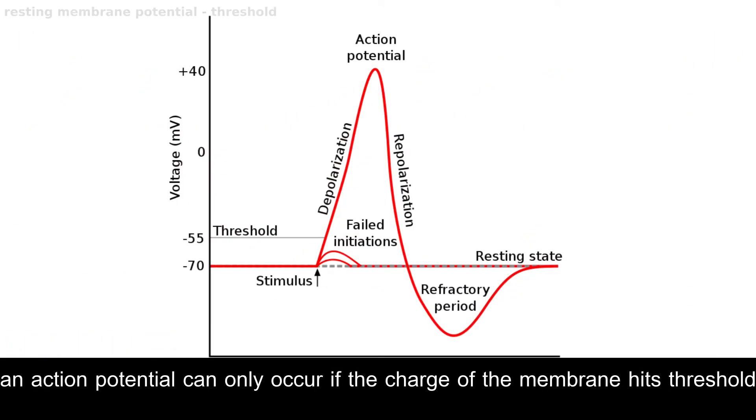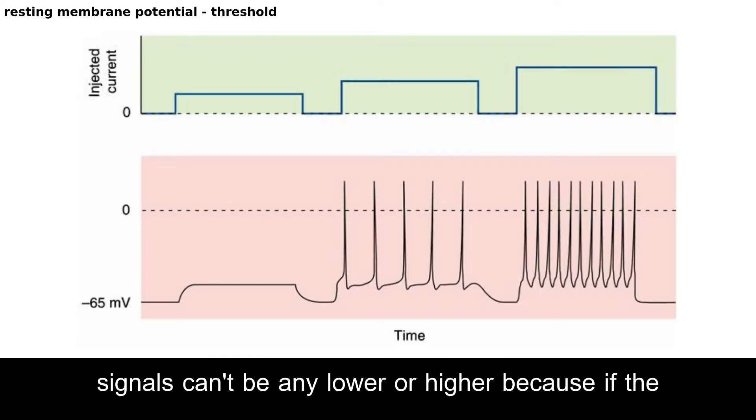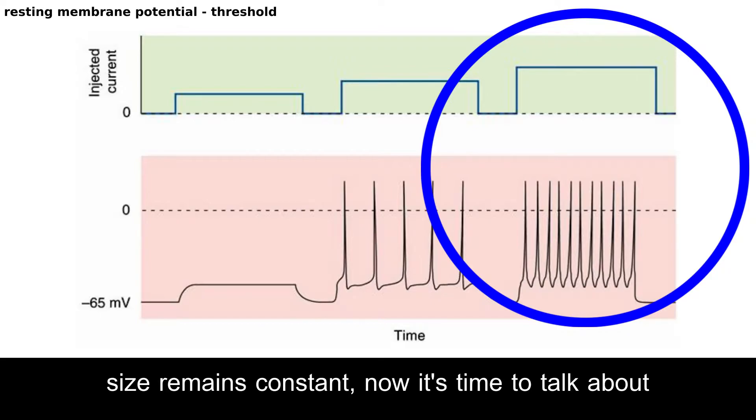And action potential can only occur if the charge of the membrane hits threshold, negative 55 millivolts. Anything lower and then it won't trigger an impulse, which it always does reliably. Signals can't be any lower or higher, because if the stimulus has high intensity, neurons just increase the rate of the firing. Size remains constant.